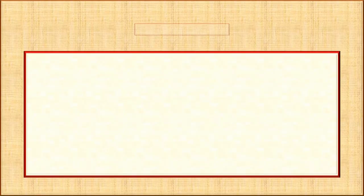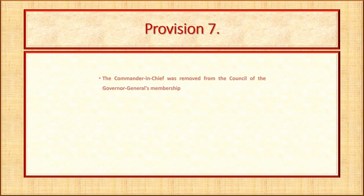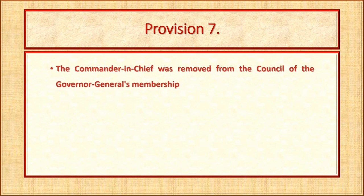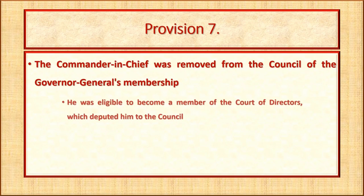It was stipulated in Provision 7 that the commander-in-chief was removed from membership of the governor general's council. He was eligible to become a member of the court of directors, which deputed him to the council.